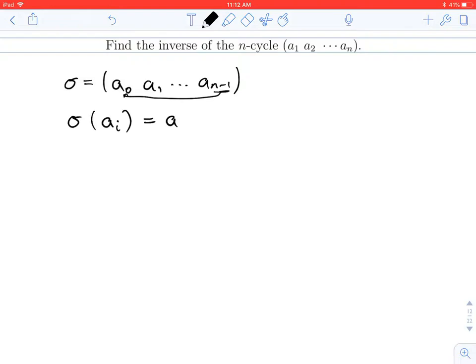So we use this notation, a_i box plus 1. And that box plus, remember, was just saying reduce modulo n. So if you were at n minus 1, you'd go back to 0.